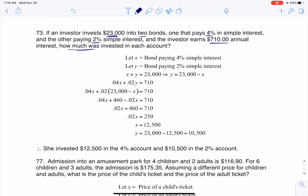So it says how much was invested in each account, so I'm going to let X equal the amount of money or the bond paying 4% interest. So when I say bond, this is the amount invested at 4%. That's what I mean when I say about a bond, and then this would be the amount invested at 2%.